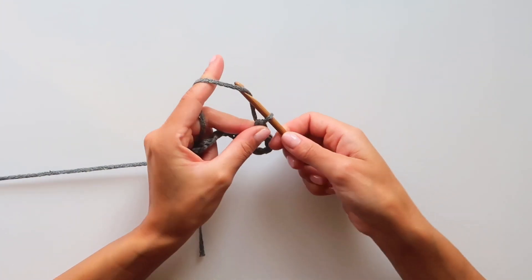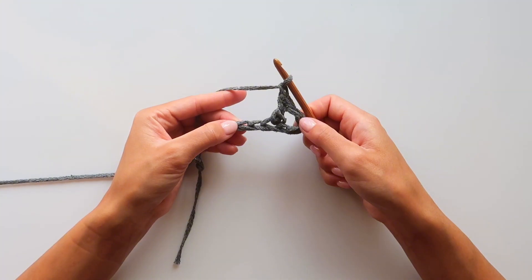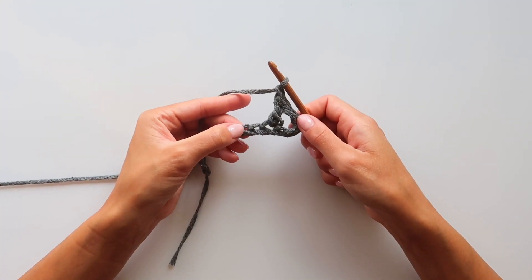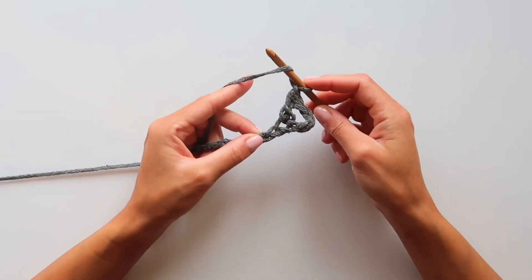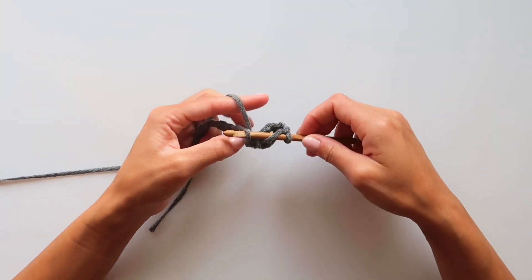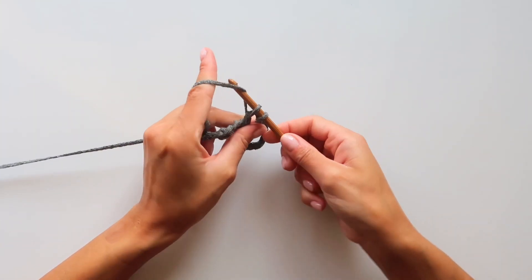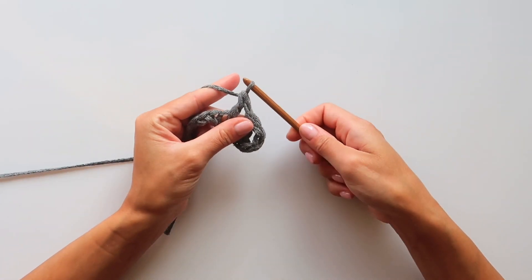Chain one, then skip the next loop and go to the next one and put the second double crochet. After every double crochet, I will chain one.